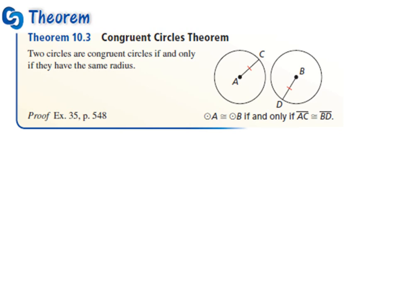Theorem 10.3 and Theorem 10.4. Theorem 10.3 says two circles are congruent circles if and only if they have the same radius.